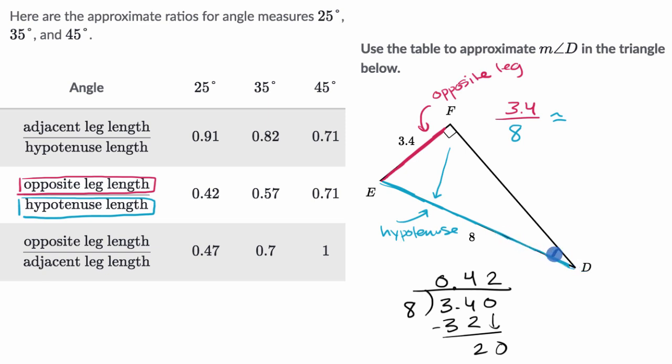For this particular triangle and this angle, when we take the ratio of opposite over hypotenuse, we get 0.42. This matches the situation in the table, which implies that this is approximately a 25° angle.